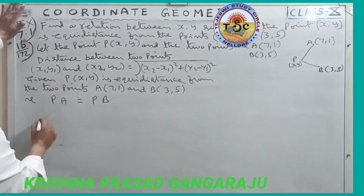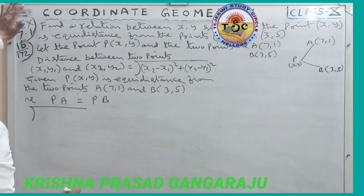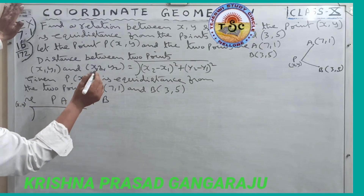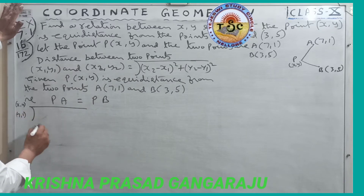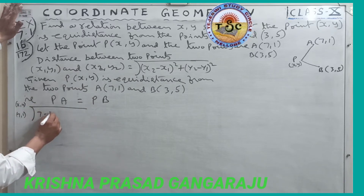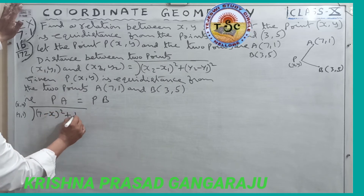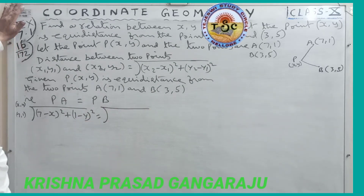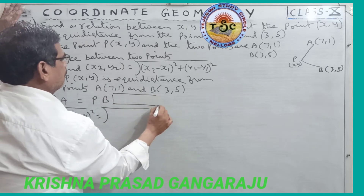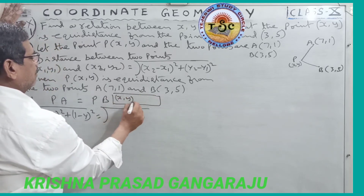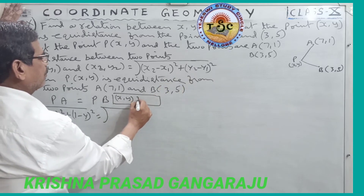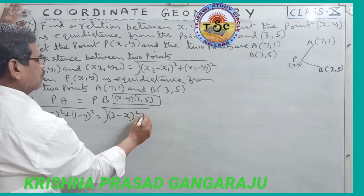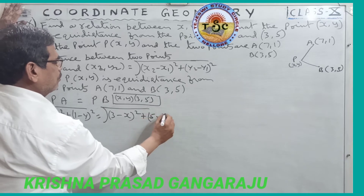Using the distance formula, PA equals the square root of (7 minus x) whole square plus (1 minus y) whole square, and PB equals the square root of (3 minus x) whole square plus (5 minus y) whole square.